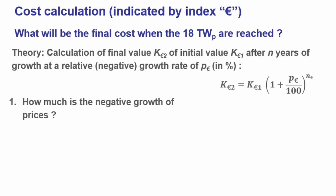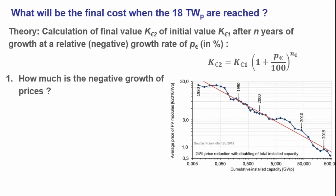First, how much is the negative growth of prices? From the cost regression graph, there was a price reduction symbolized by a red line. Over almost 40 years this negative growth remained almost constant. The rule of thumb is: 24% price reduction with each doubling of installed capacity.